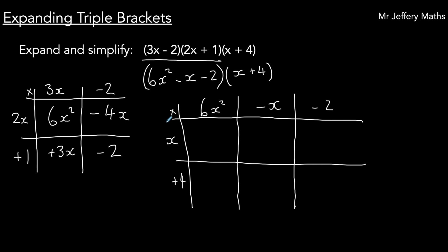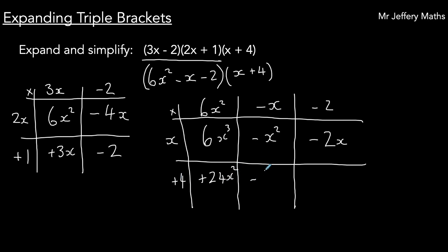Doing the same thing: x multiplied by 6x squared gives me 6x cubed, x multiplied by negative x gives me negative x squared, x multiplied by negative 2 gives me minus 2x, 4 multiplied by 6x squared gives me 24x squared, 4 multiplied by negative x gives me negative 4x, and 4 multiplied by negative 2 gives me negative 8.